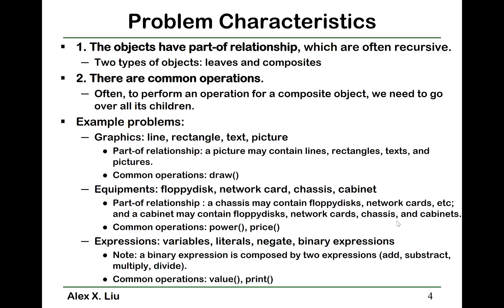In real life, there are many problems with these two characteristics. For example, in graphics, you have lines, rectangles, text, pictures, circles, and they have this part-of relationship — a picture may contain lines, rectangles, text, pictures, and circles — and they have common operations like draw. Another example is equipment: you may have floppy disks, a network card, chassis, and cabinets. A chassis may contain floppy disks and network cards; a cabinet may contain floppy disks, network cards, chassis, and even other cabinets. They also have common operations, such as calculating the power usage or price of an equipment.